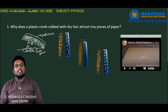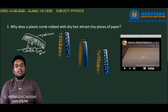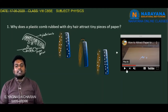Why does the plastic comb rubbed with dry hair attract tiny pieces of paper? Whenever we rub the plastic comb on dry hair, the electrons of the hair are transferred to the comb, so the comb becomes electrically charged. When this comb is kept near pieces of paper, induced dipole formation takes place and the pieces of paper are attracted to the comb.